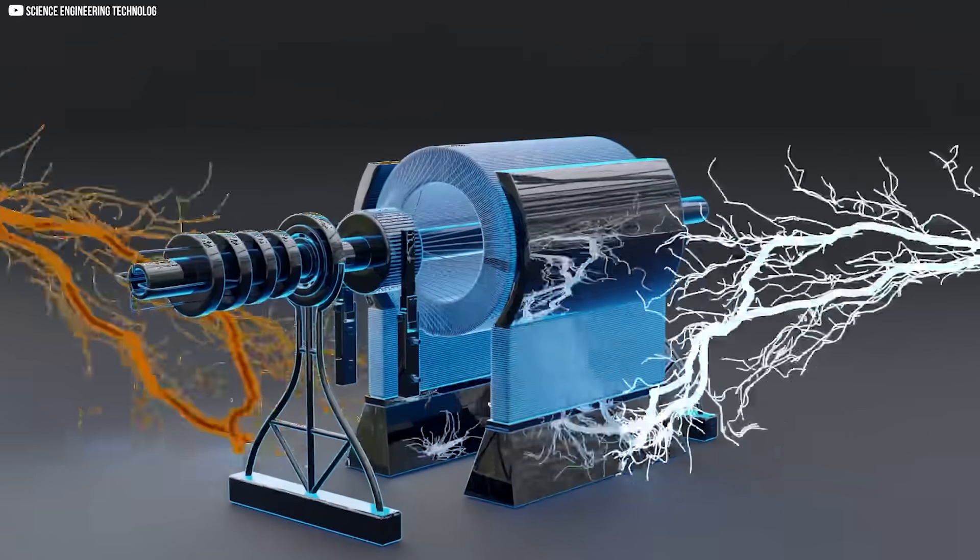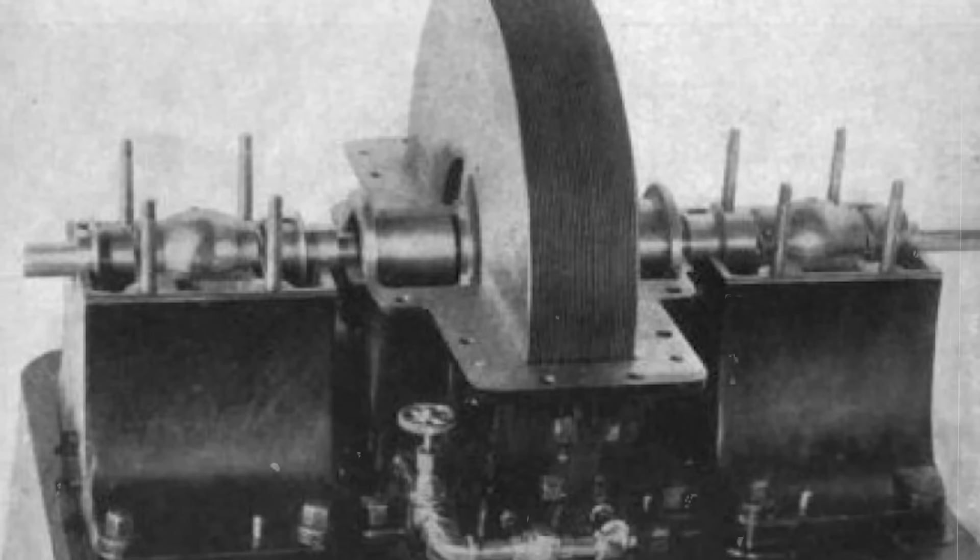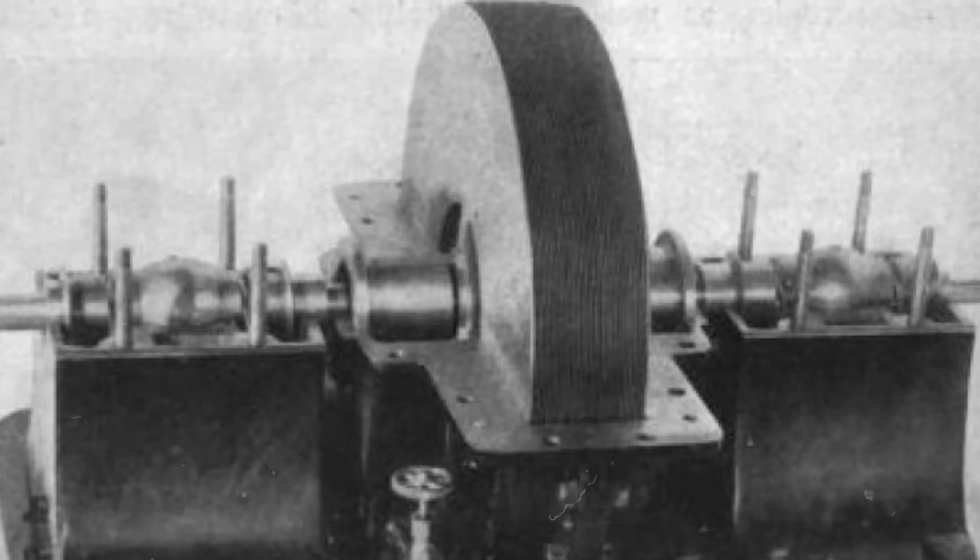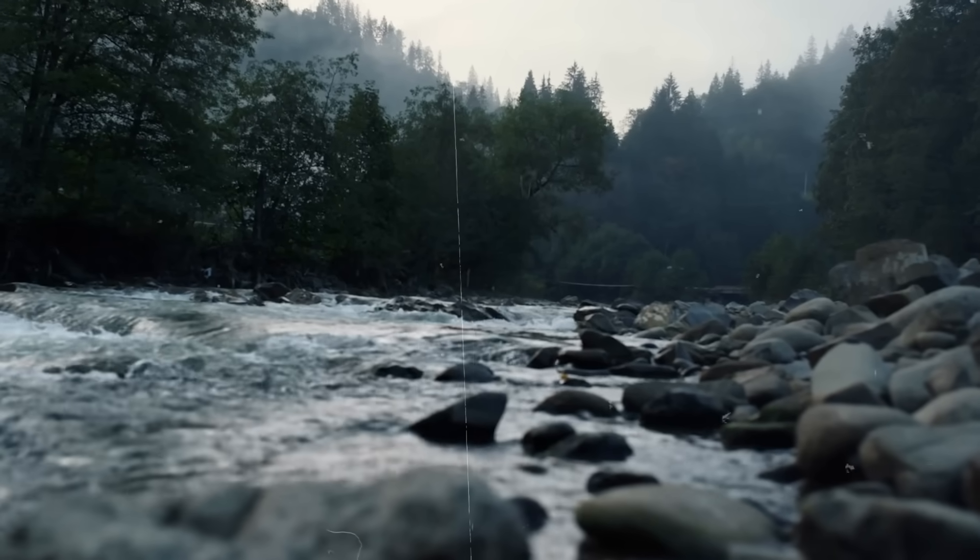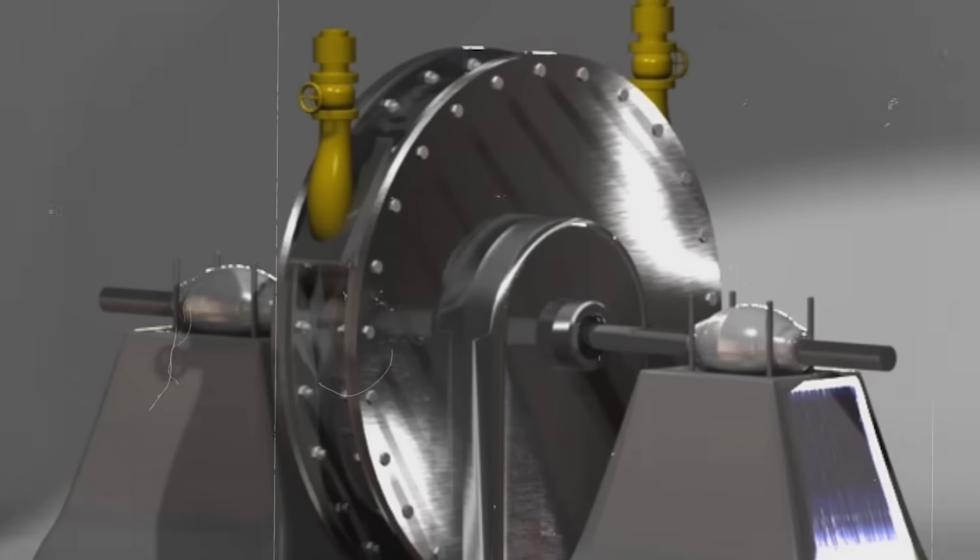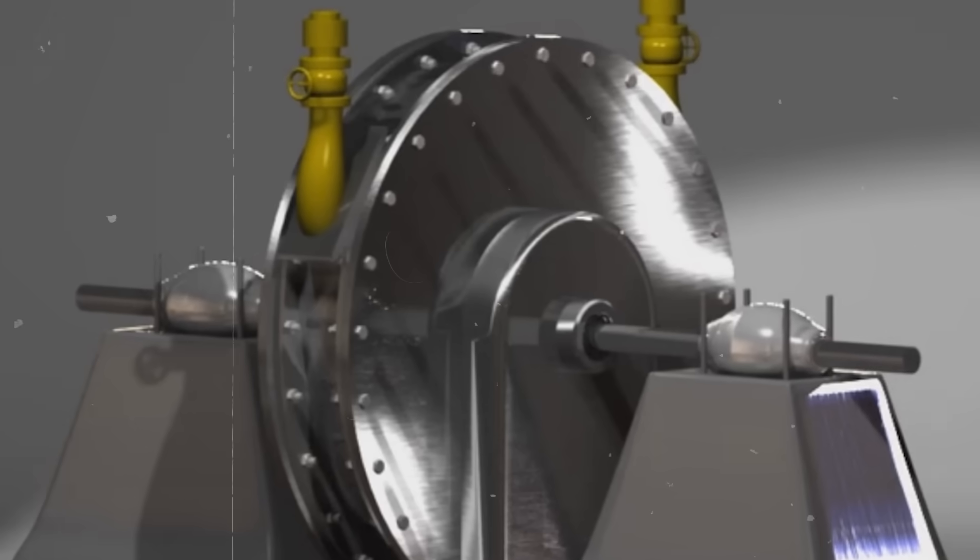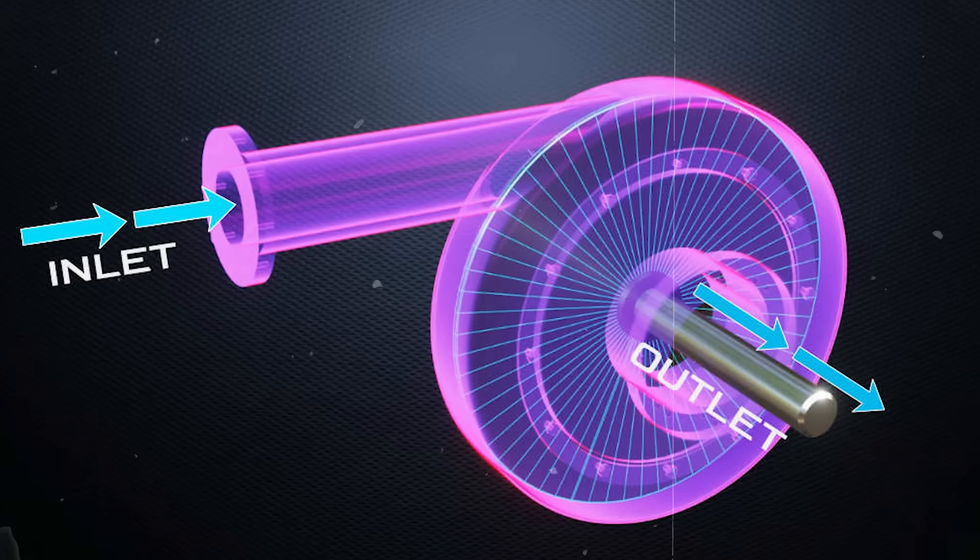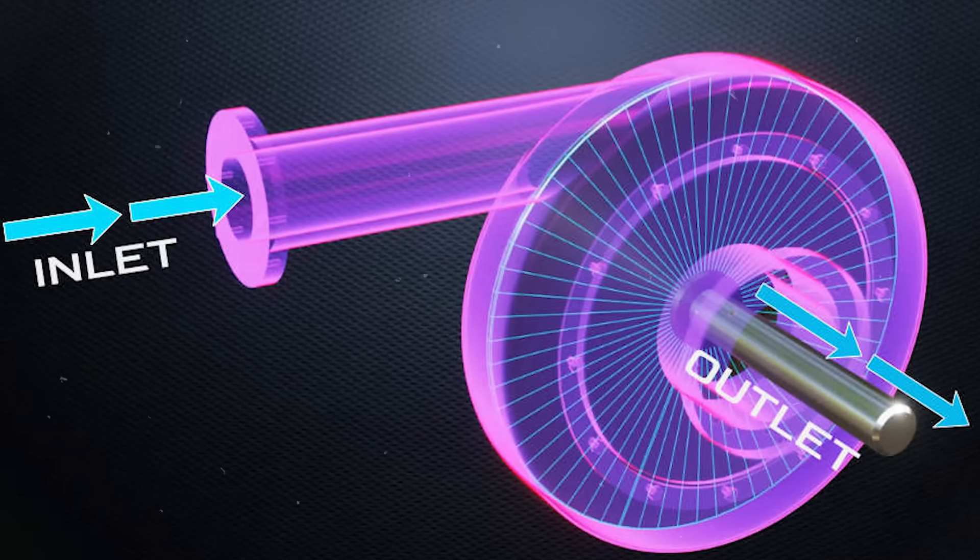Within this microscopic zone, energy is transferred. One layer tugs the next. Friction spreads. Momentum builds. Tesla realized that this thin region held the key to efficient energy transfer. So he spaced his discs carefully, just close enough that the boundary layers from each side would overlap. The result? There was no wasted flow. No dead zones of energy.